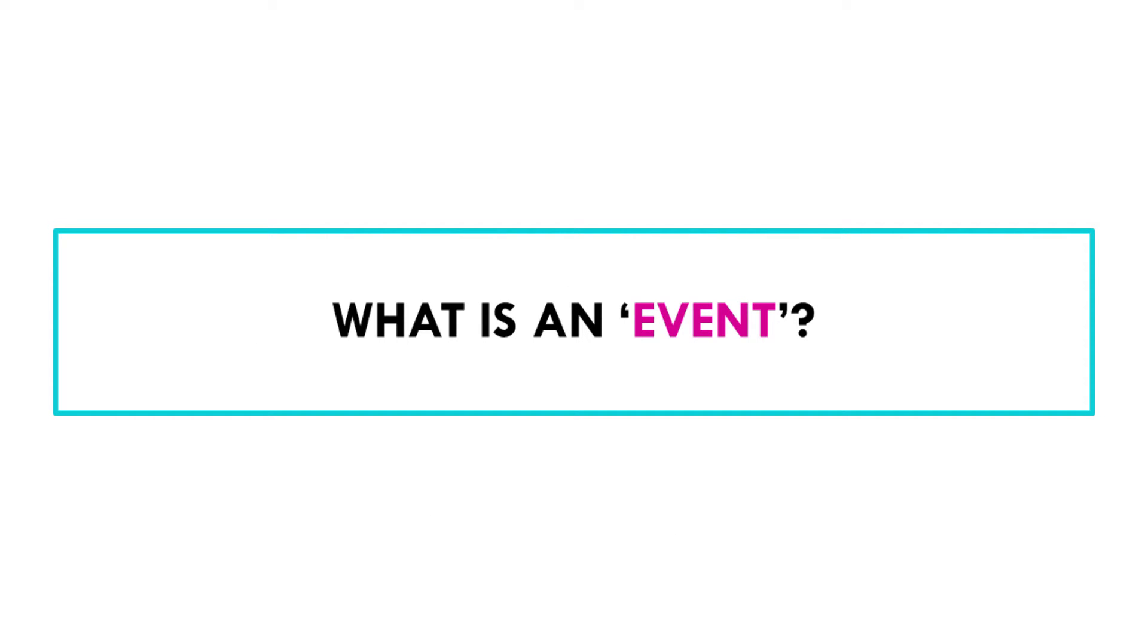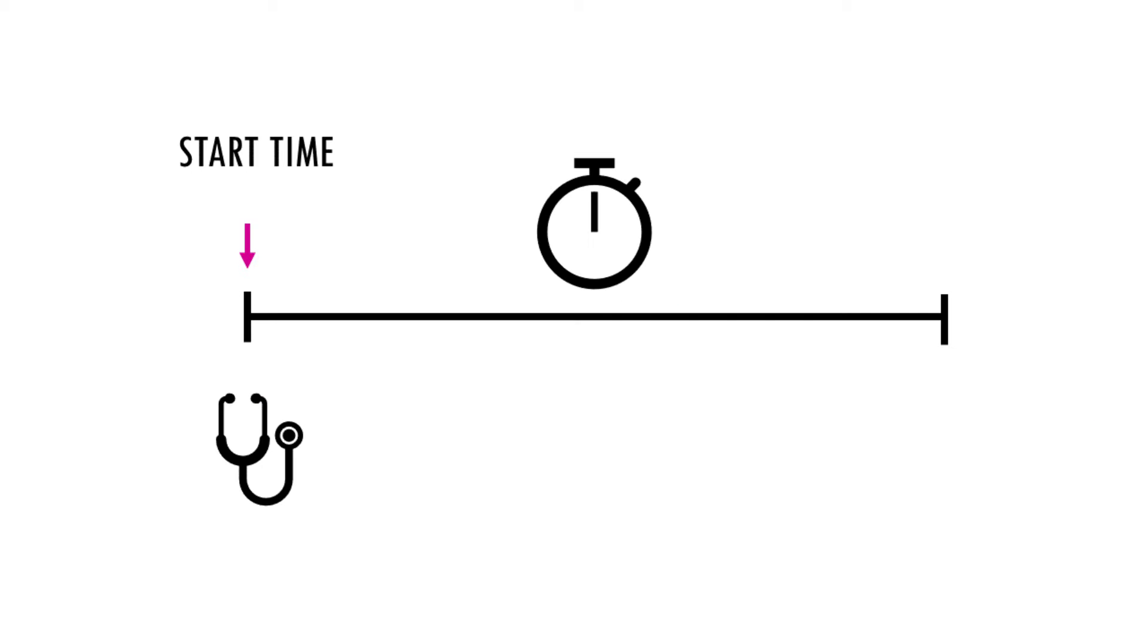Well, typical examples of an event of interest in a clinical setting are death or time to relapse. So it's important that the variable of interest has a start time, for example, the moment when the patient is diagnosed with a disease.